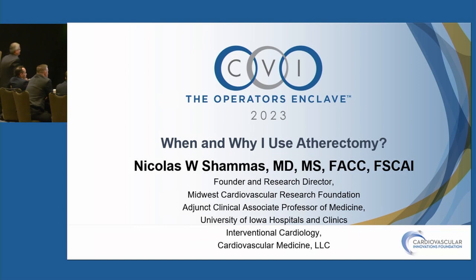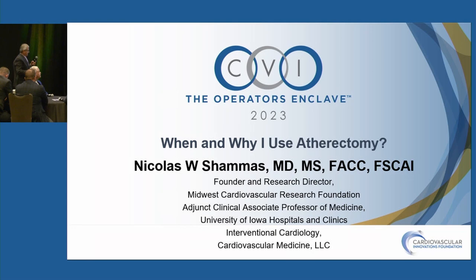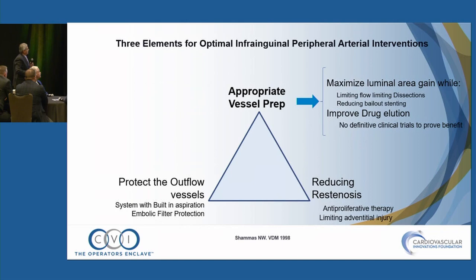Dr. Chalmers presents on when and why to use atherectomy. If you use only the Wall Street Journal as your scientific journal, you'd probably quit using atherectomy. But let's talk about what's really true with atherectomy. There are three elements to optimal intra-inguinal peripheral arterial interventions: appropriate vessel prepping, reducing restenosis, and protecting the outflow vessels.